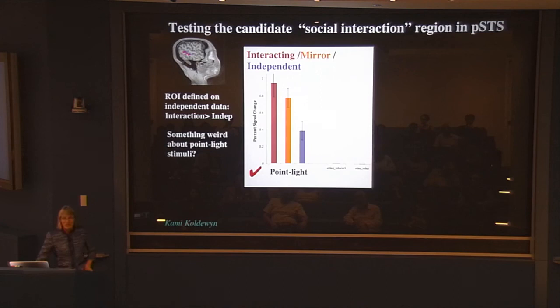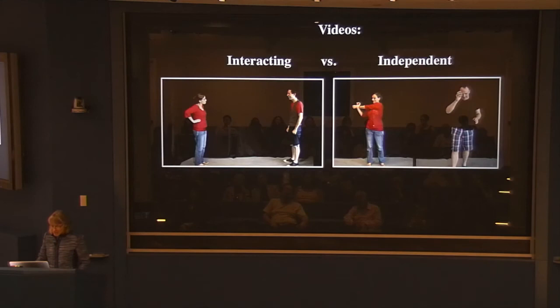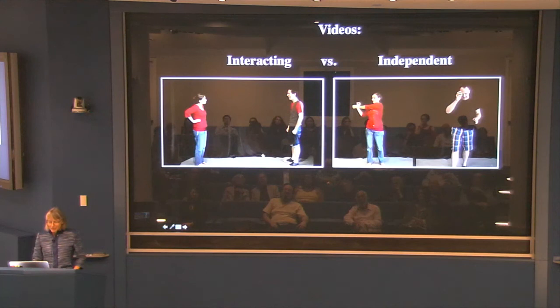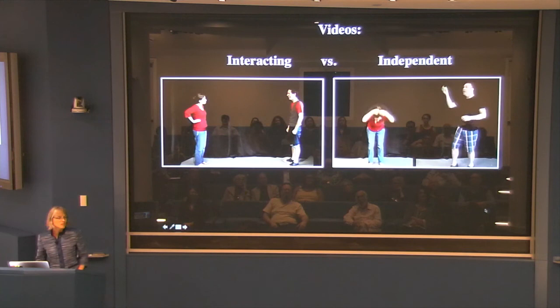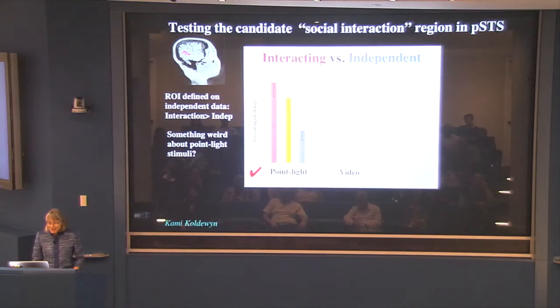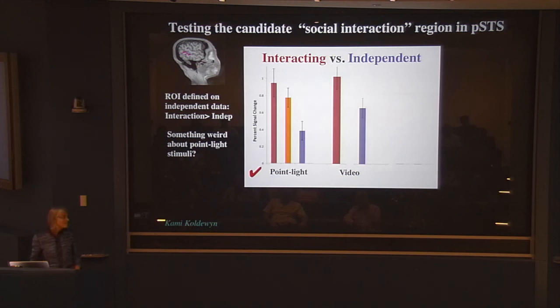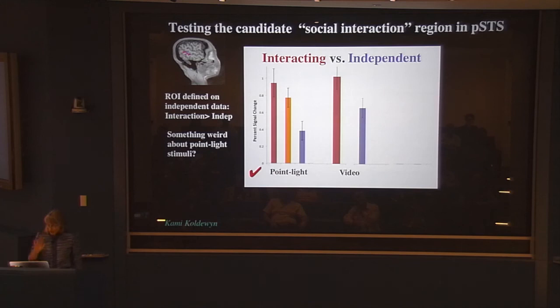But we shouldn't believe it on one shot. Maybe it's something weird about point light movies. So we also filmed real videos — we went to Cambridge TV and filmed lab members doing simple interactions. Same basic contrast but with real video. Same result: higher response to interactions than independent activities. We also tested static images of interacting versus non-interacting people — and there we get essentially no effect; it's minuscule. I think this is related to the nearby region that likes face motion but not stills.